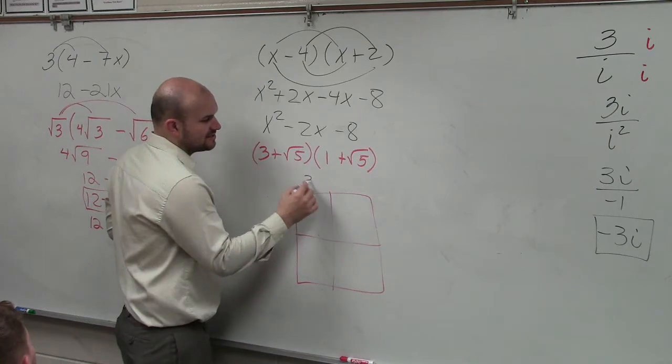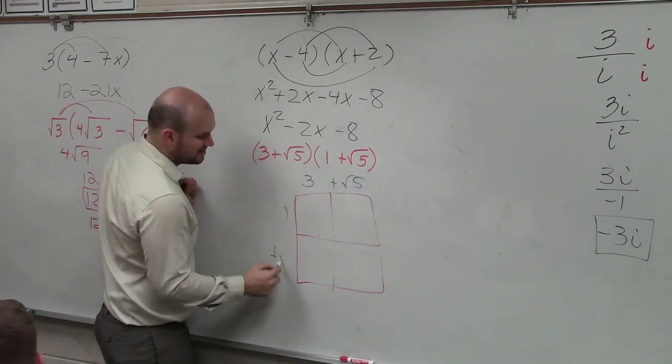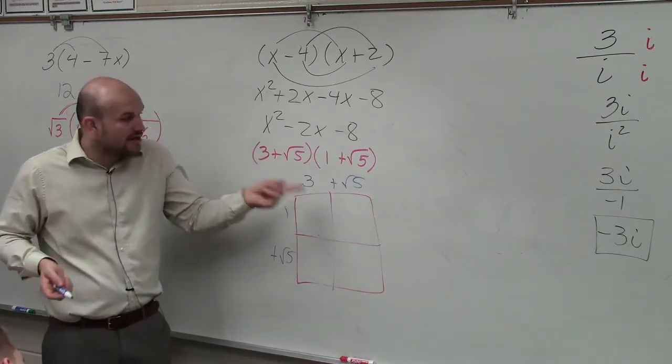So in this case, I can organize this as 3 plus the square root of 5 and 1 plus square root of 5. Now I simply just find the area of each box.